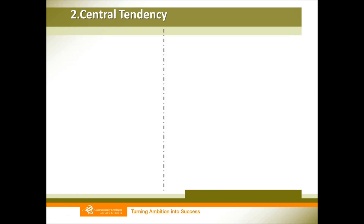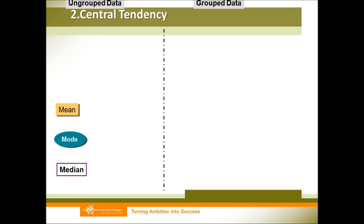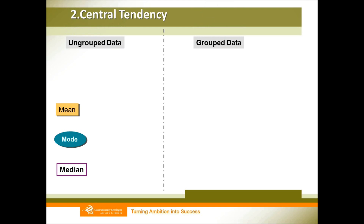For central tendency, we always talk about three things: mean, mode, and median. But we first need to distinguish ungrouped data and grouped data. For ungrouped data, to calculate the mean — which is the average — we add all the data up and divide by how many data points we have. In this case we have five data points, so we divide by five. As for the mode, that is the most frequently occurring number. In this data set, two has occurred twice while the other numbers occurred only once, so our mode is two.